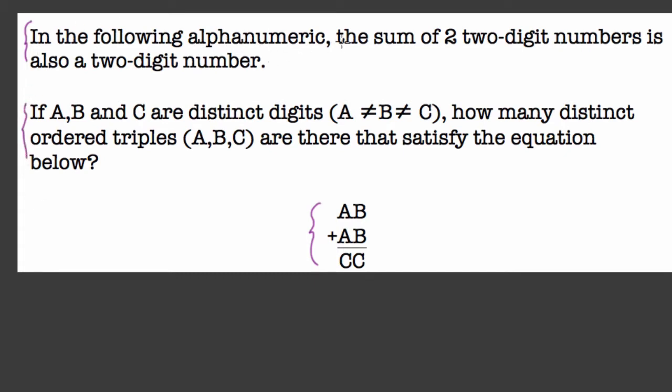It tells us that in the following alphanumeric, the sum, maybe you want to translate that, right, that's for addition, the sum of two-digit numbers is also a two-digit number. So we're adding two-digit numbers and getting two-digit numbers, so here it tells me right away, oh, A, B, and C are most likely just representing digits.